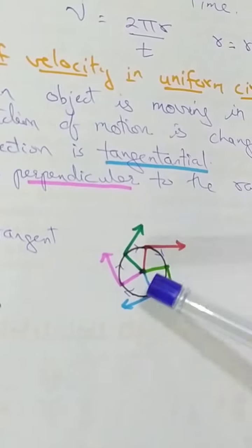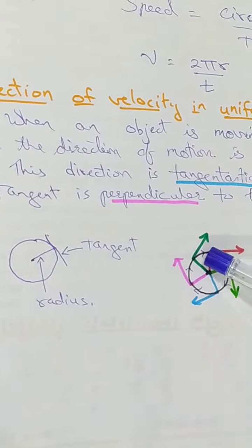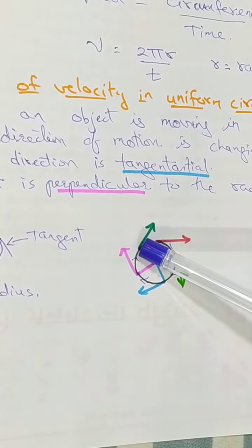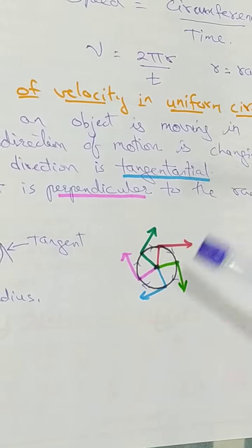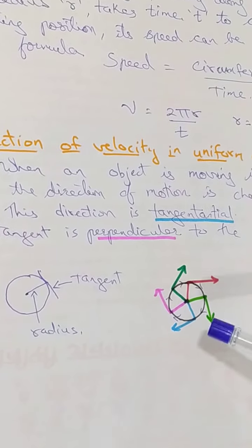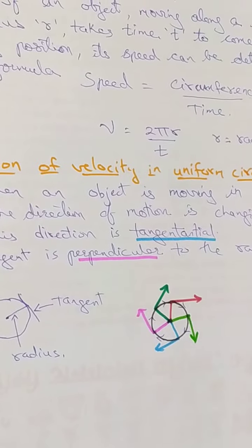Here you can see clearly, if it is moving in a circular path, at each point the direction changes. At this point, it goes in this way. So that is the tangential direction. At each point, you will see that the direction is changing and that direction is the tangential direction. Here we have discussed the circular motion.